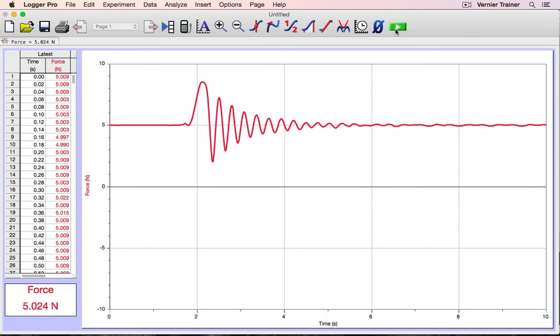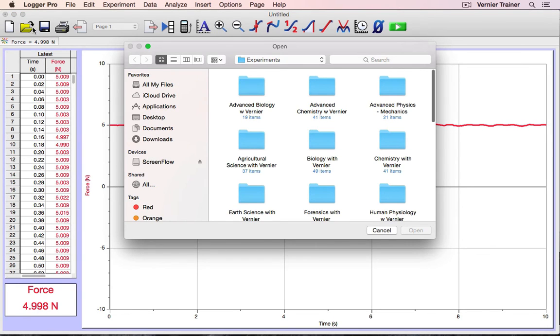So what is the specified data collection duration? Logger Pro gathers those data collection parameters from one of two places. First, data collection parameters are stored with an experiment file. So if you open an experiment file that was previously prepared, it'll use the data collection parameters associated with that file.